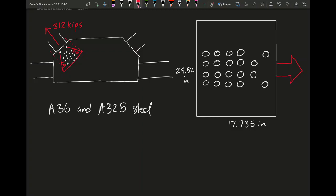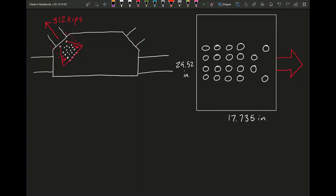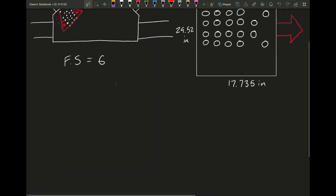If we want to calculate that out, we can use a Whitmore area. Starting from the bolt over here, we can go out at about a 30 degree angle on each side and stop at the bolt over here. This will be our effective area for our shear forces and all of our other calculations. Using the Whitmore calculation, we end up with a plate of 29.52 inches on the height and 17.735 inches for the width.